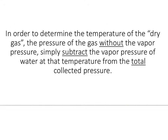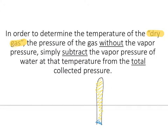In order to determine the pressure of the dry gas — which is all our gas without the water contribution — we subtract the vapor pressure of water at that temperature from the total pressure. The cool thing about water is that it has the same vapor pressure at a given temperature, and they'll typically tell you that. For example, collecting at 25 degrees Celsius means the vapor pressure of water is 23.8 torr. Subtract that from the total, and you get the pressure of the dry gas. It's worth highlighting the phrase dry gas.